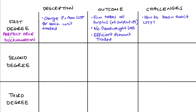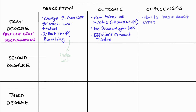Because of this, first degree price discrimination is sometimes described as perfect price discrimination. Apart from charging price equal to willingness to pay for each unit, we can also perfectly price discriminate using two-part tariffs and bundling. I won't go through these methods here as it won't be important for everyone, but I have done separate videos on these practices and I'll link to them in the description below.